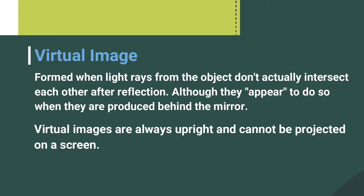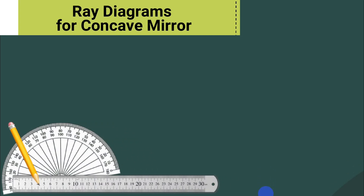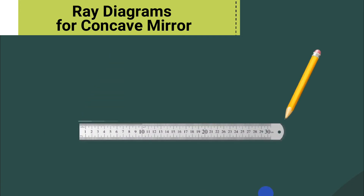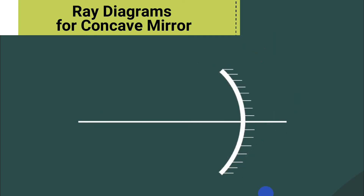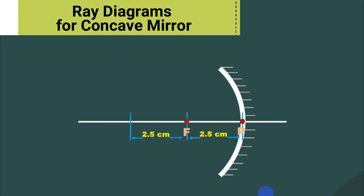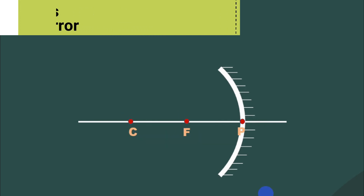Let's now have the ray diagrams for the concave mirrors. The ray diagrams require a pencil or ball pen, protractor, and ruler. Draw a line representing the principal axis, then with a protractor, draw an arc as your concave mirror. Mark the pole on the center of the curve. From the pole, measure 2.5 centimeters and mark this point the focus, or F. Then measure another 2.5 centimeters from the focus and mark that point the center of curvature, or C. Draw dash lines at the back of the concave mirror. For the concave mirror, there are 6 possible positions where the object can be placed and an image is formed.